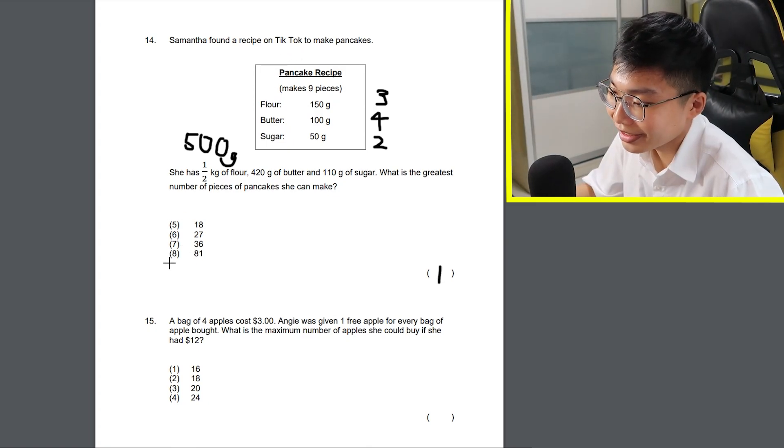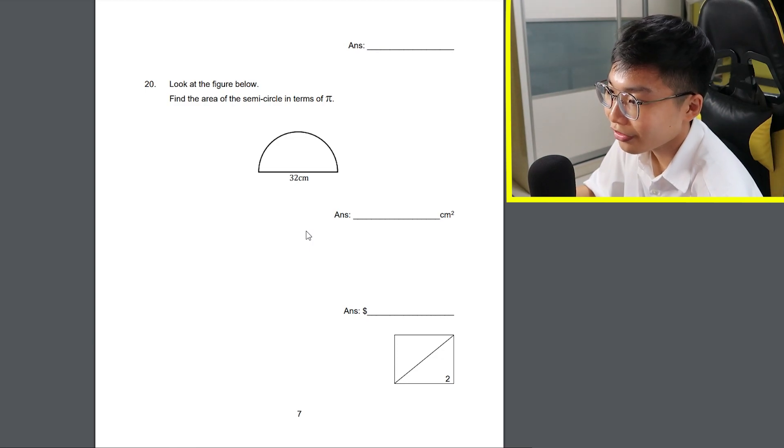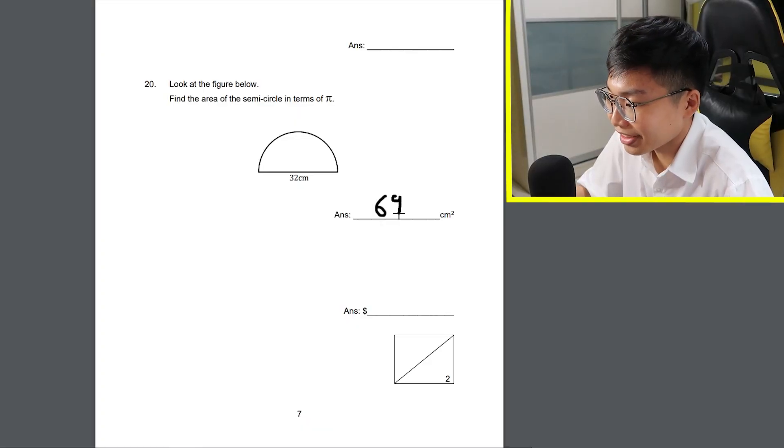Also, I think there's a mistake here. Why is it 5, 6, 7, 8? Oh, that's it for the MCQ. Oh no. Question 20. Look at the figure below. Find the area of the semicircle in terms of pie. Honestly, as I said, I forgot everything about area already. I'm just gonna go for 69 because why not, right?